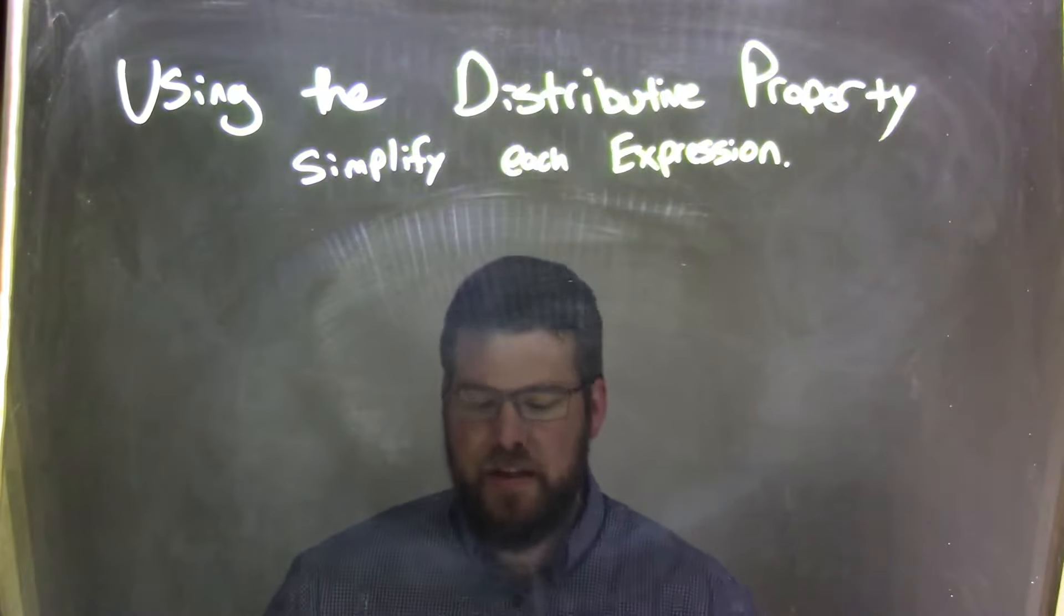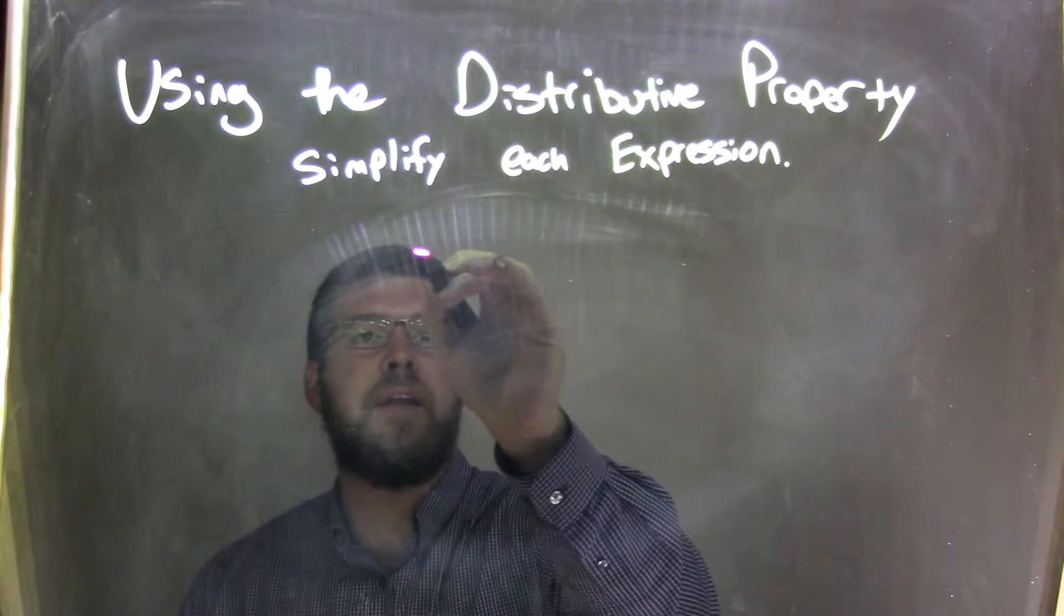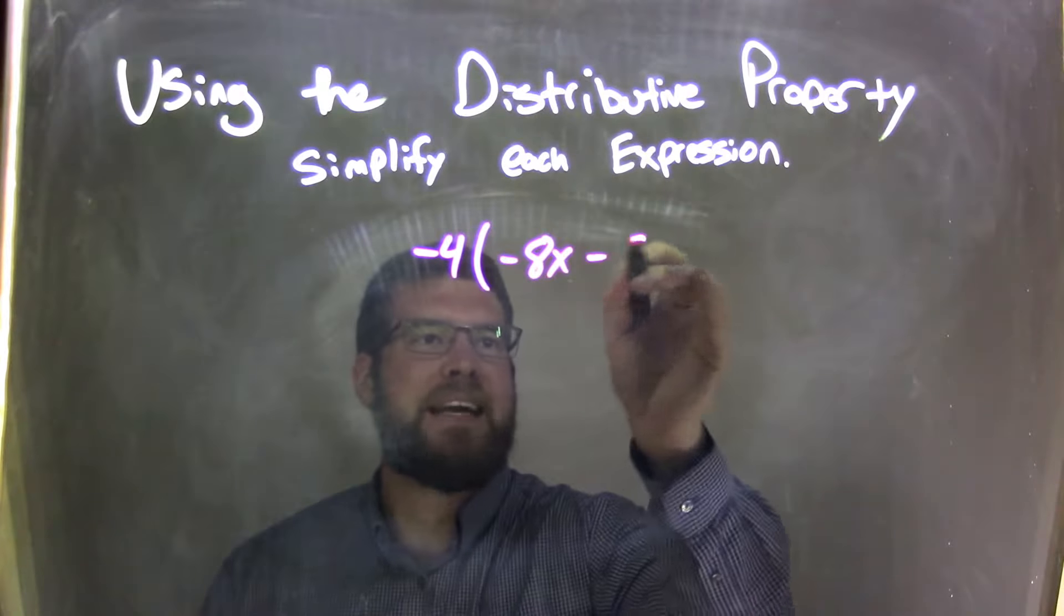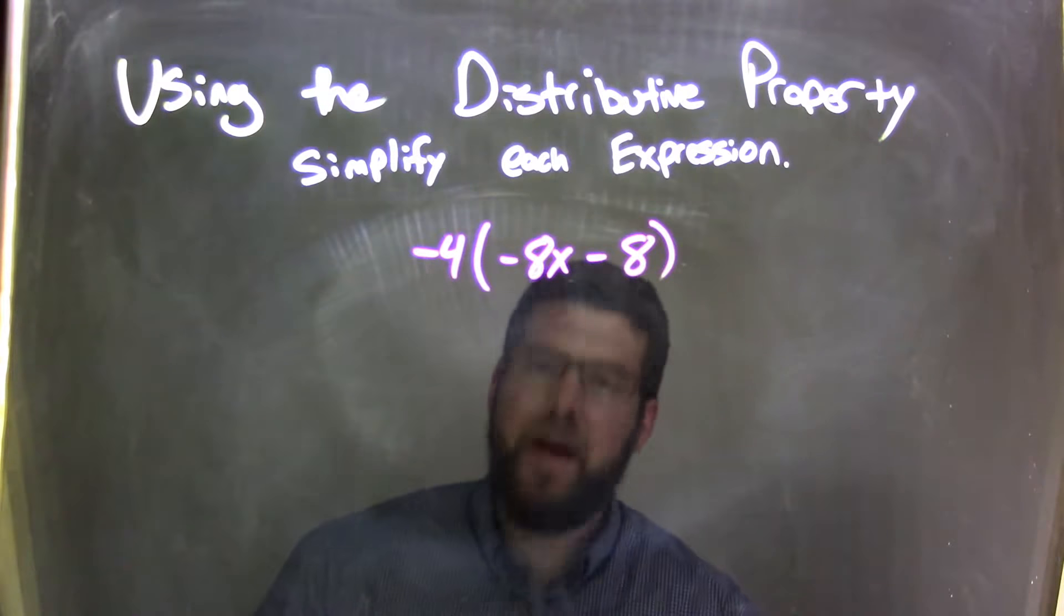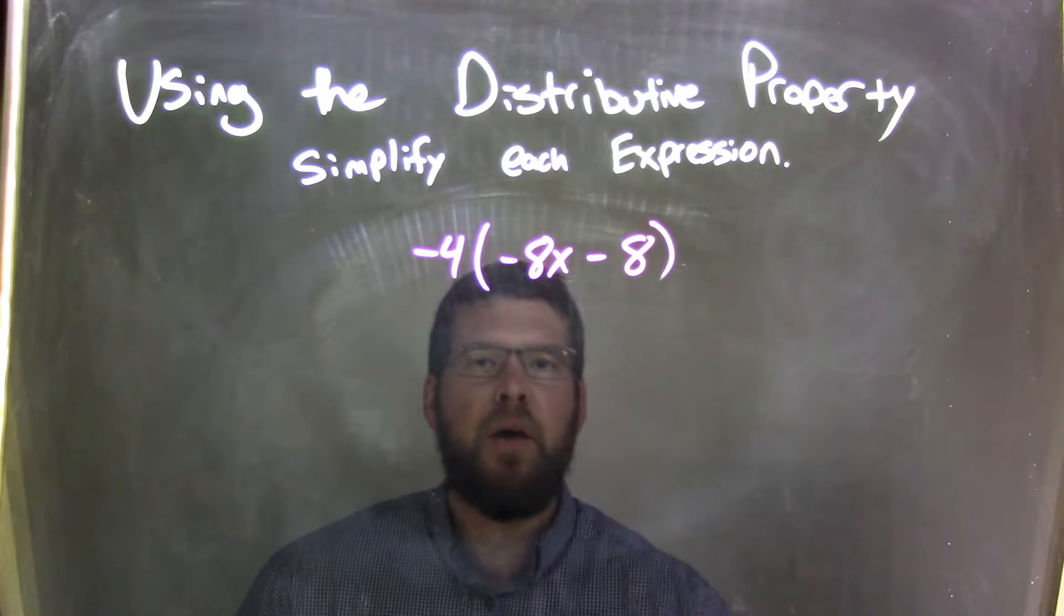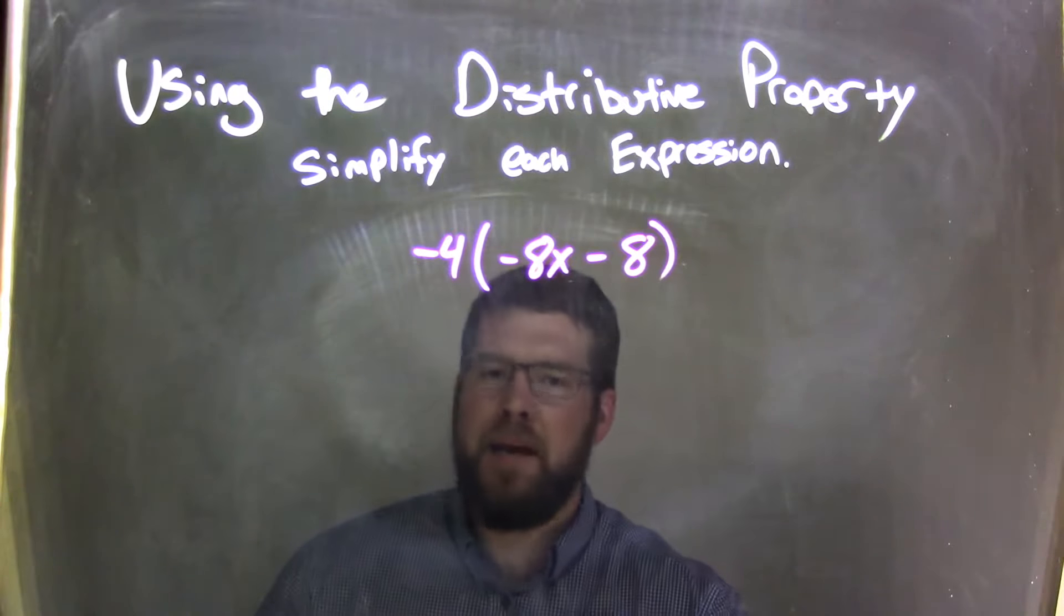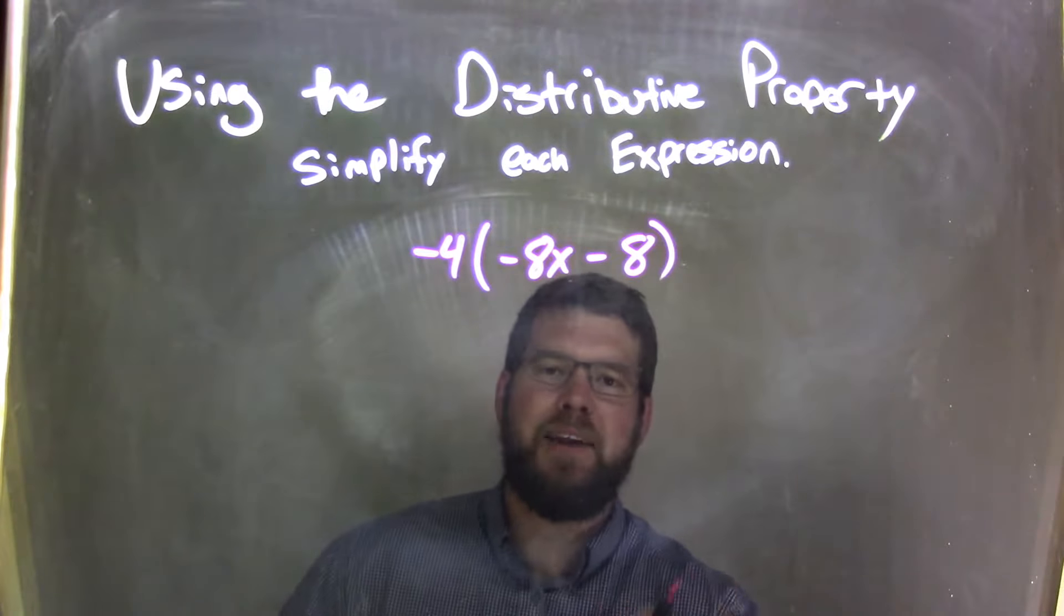So if I was given this expression, negative 4 times negative 8x minus 8, and I need to simplify it. Well, I see 8x minus 8 inside the parentheses, but again, not like terms, cannot do anything about it.